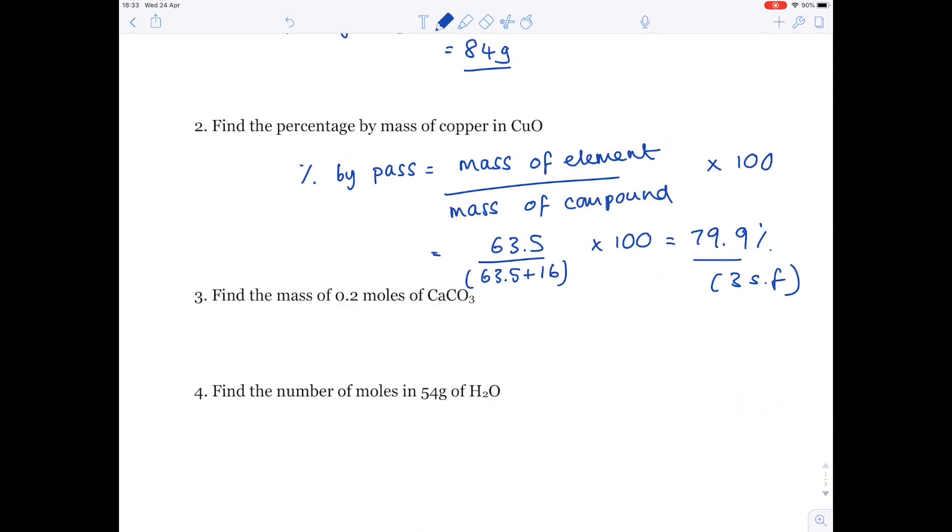Next up, find the mass of 0.2 moles of calcium carbonate. So, you need to use this formula triangle, which states that mass is MR times number of moles.